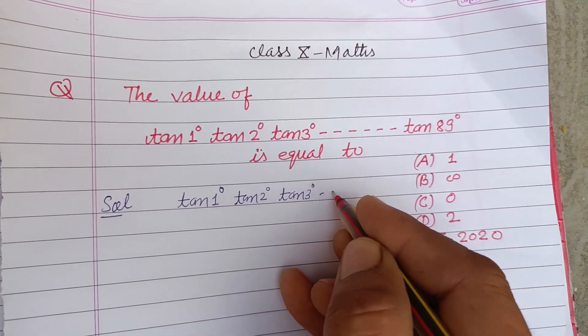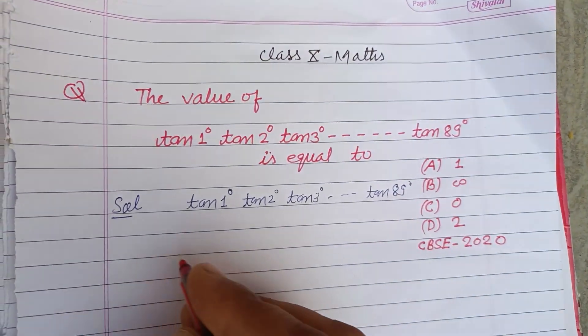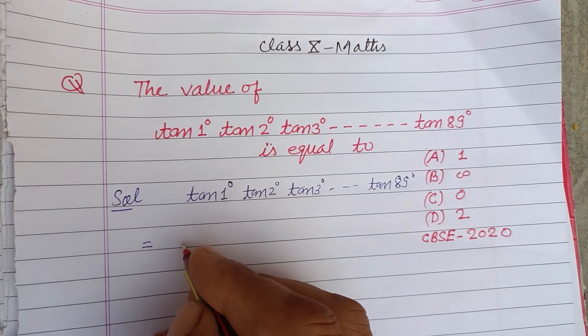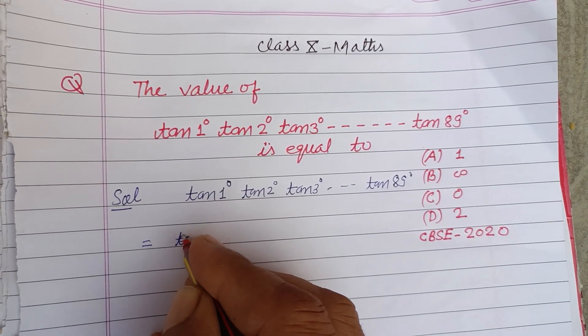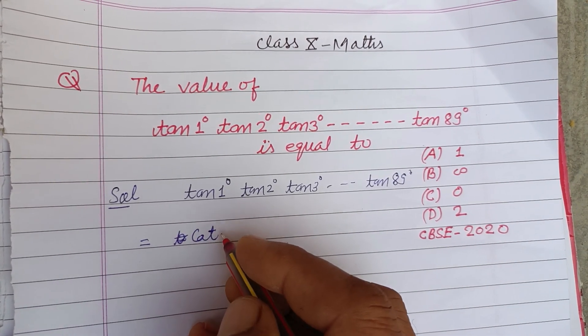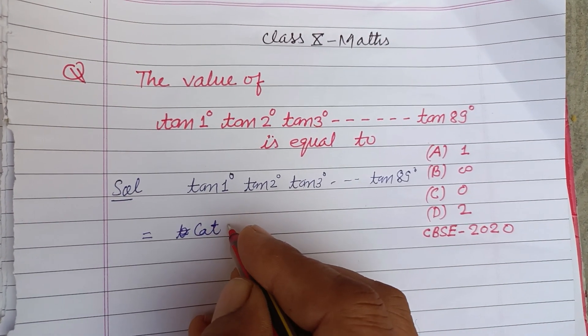tan3° and so on, multiplication tan89°. So students, tan1° can be written as cot89°, or we can write it as cot